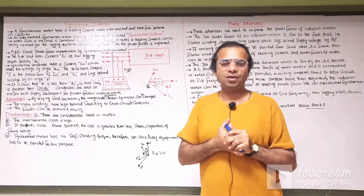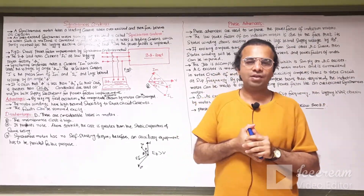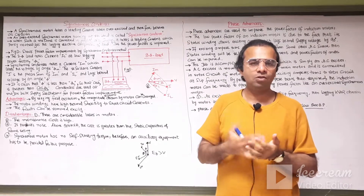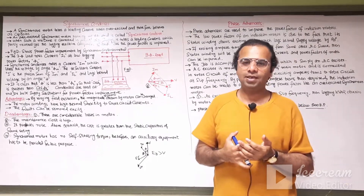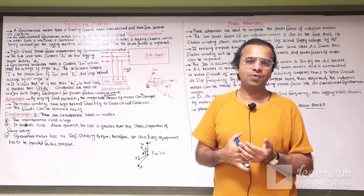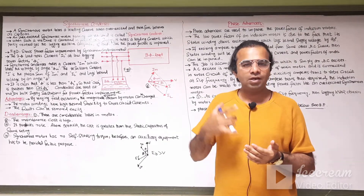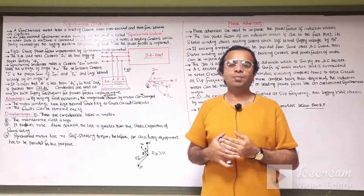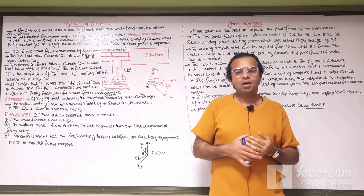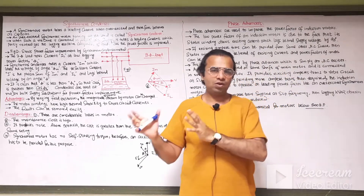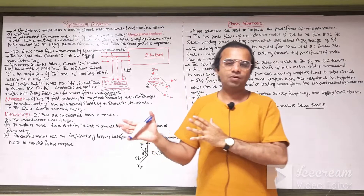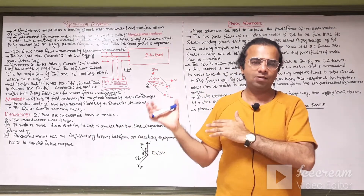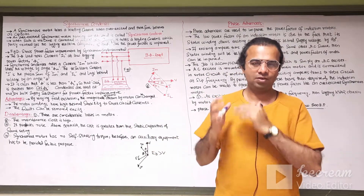Let us recall the power factor. The power factor is the cosine of the angle phi between the voltage and the current. It is also the ratio of resistance over impedance, or the ratio of active power over apparent power.